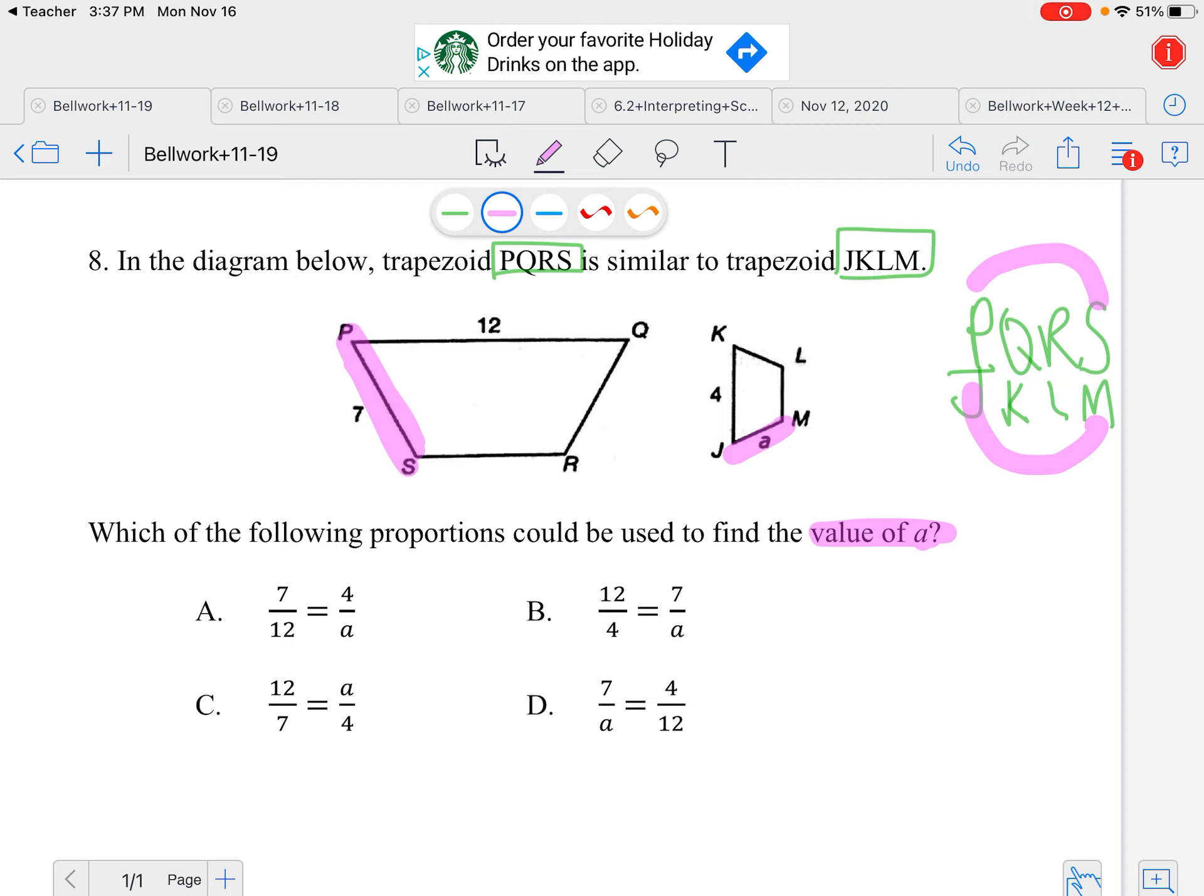So now I could color code my answer choices. The 7 and the A need to be the same color. Now if they are matching, they should be together. Diagonal is wrong because they're not side by side, saying that they're similar and in the same position. These are also diagonal, so that means this one's wrong. They're not in the same position.